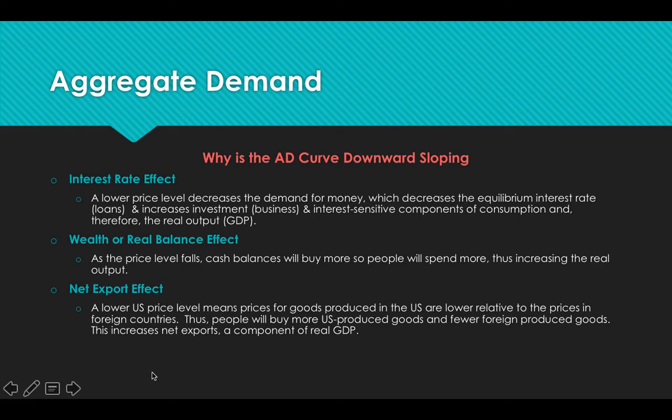Just like our regular demand curve, aggregate demand is also downward sloping — prices go down, output is going to increase.